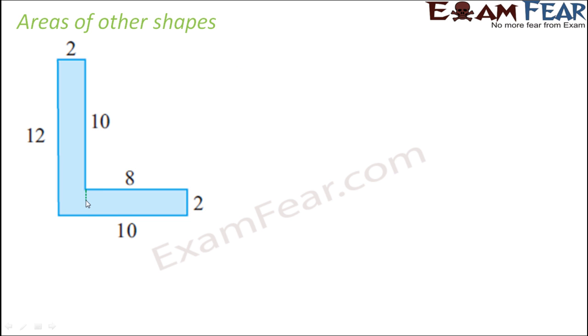For example, if we assume that there is a line drawn here like this, what happens? Let's name it also. In that case, this becomes a rectangle. This side is 2, this side is also 2, this side is 12 and this total side, till here it was 10, but now it is 10 plus 2 because this is 2. So this becomes a rectangle, right? So let's call this A, B, C, D.